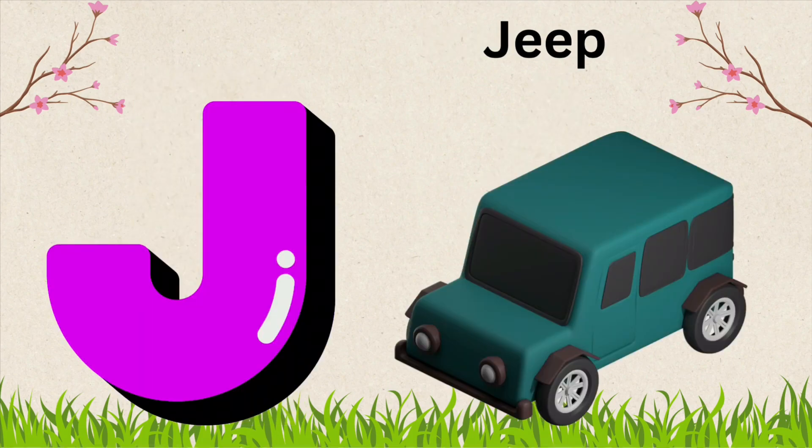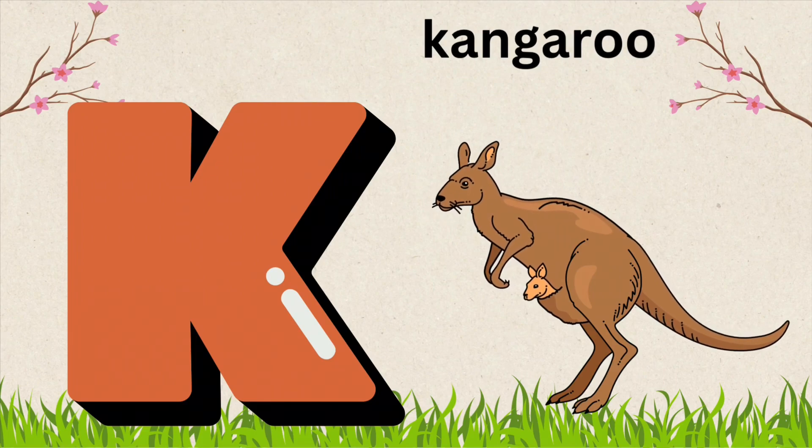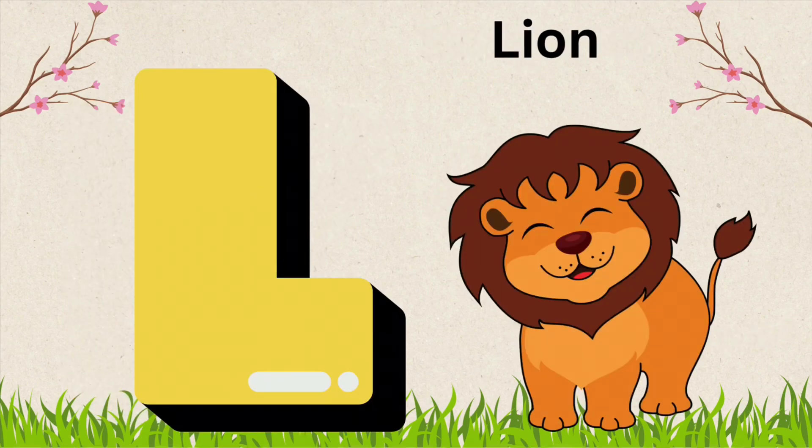J is for Jeep. J, double E, P, Jeep. K is for Kangaroo. K, A, N, G, A, R, double O, Kangaroo. L is for Lion. L, I, O, N, Lion.